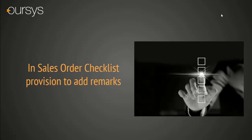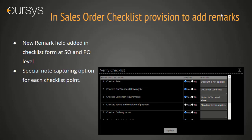In Sales Order level, a checklist provision to add Remarks is given. We have added a new Remarks field for each checklist point. We can use this field to capture the reason or purpose of a checklist point which we are not following as per the given terms. For example, if you mark a checklist point as No, you can update the reason behind that, so in the future an auditor or management will know why the user did this.